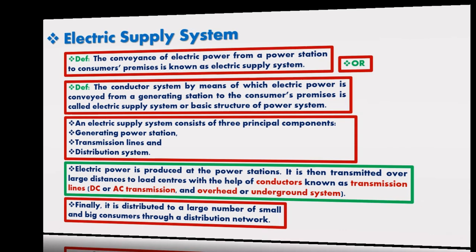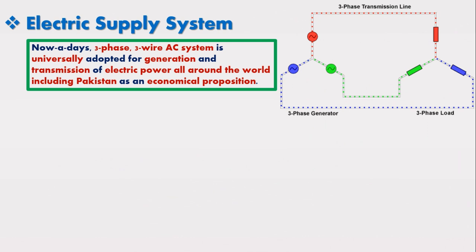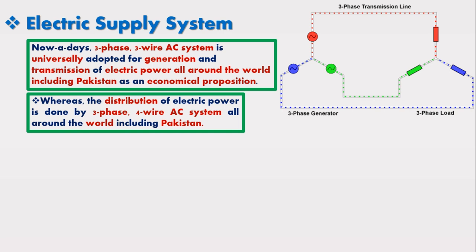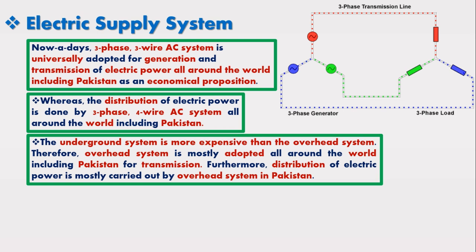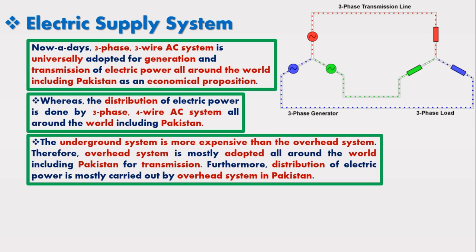It may be noted that three-phase, three-wire AC system is universally adapted for generation and transmission of electric power all around the world including Pakistan, as it is an economical proposition. The distribution of electric power is done by three-phase, four-wire AC system all around the world including Pakistan. The underground system is more expensive than the overhead system; therefore, overhead system is universally adapted for transmission, and distribution of electric power is mostly carried out by overhead system in Pakistan.